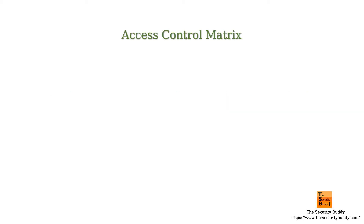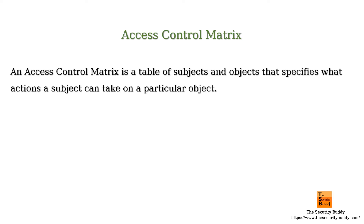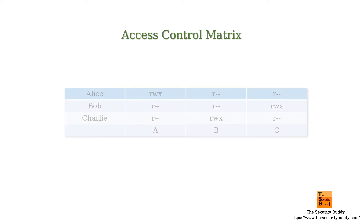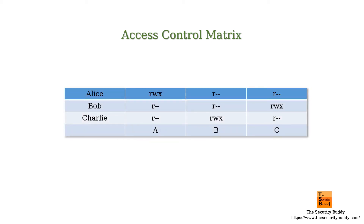In computer science, an access control matrix is a table of subjects and objects that specifies what actions a subject can take on a particular object. For example, here is an access control matrix — there are three resources A, B, and C, and there are three users: Alice, Bob, and Charlie.